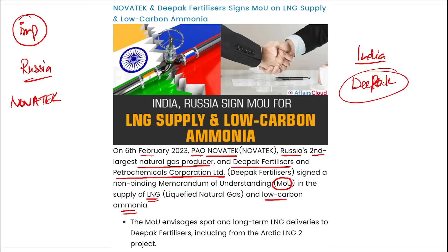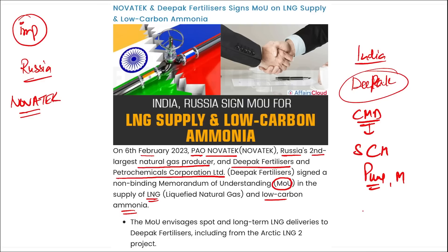The parties also intend to collaborate in the long-term supply of low-carbon hydrogen and ammonia produced using carbon capture and underground storage and cracking of renewable resources at Novatek's future gas chemical site in Russia. Novatek is the 7th largest publicly traded company globally by natural gas production volume and the second largest natural gas producer of Russia. Deepak Fertilizers and Petrochemicals Corporation Limited: chairman and MD is Satish Chintamani Mehta, headquartered in Pune, Maharashtra, established in 1979.